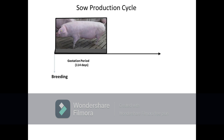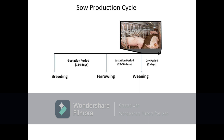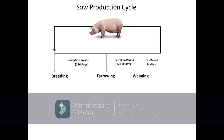After which, the pregnant female will give birth or farrow, then followed by a lactation period of about 28 to 30 days. After the lactation period, weaning takes place wherein the sow is separated from its piglets and transferred to the breeding pen, where the sow spends its dry period of about 7 days and is conditioned for the next breeding time.